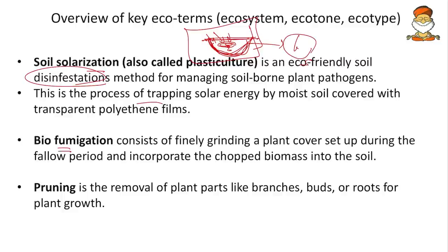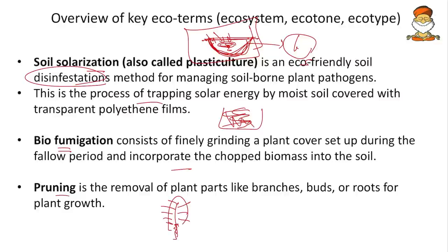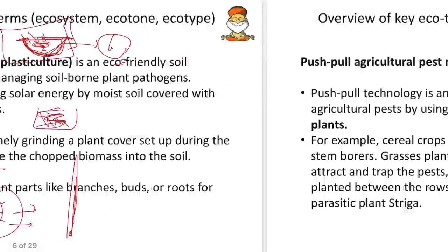Next is bio-fumigation. Fumigation means spraying — like when the municipality sprays gases during dengue. Bio-fumigation means cutting dead and decayed leaves into smaller parts and spreading them over the field so they convert into fertilizers. Then we have pruning — cutting down branches and leaves of a tree so that its stem increases in width, enhancing growth. Without pruning, trees just grow taller.